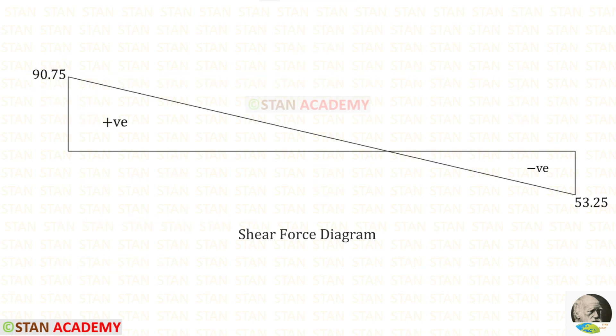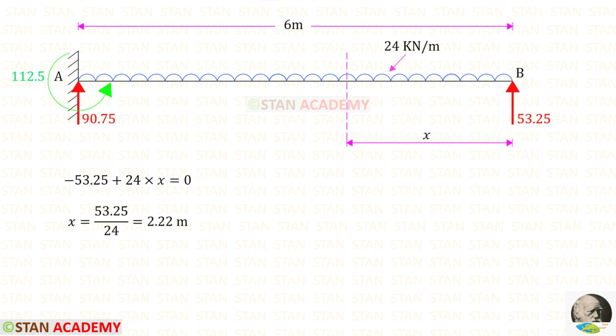Here you can see the shear force diagram. At a certain point, the shear force becomes zero. We make a section at a distance x from point B, and since the shear force is zero at that point, we can use that concept to find x.